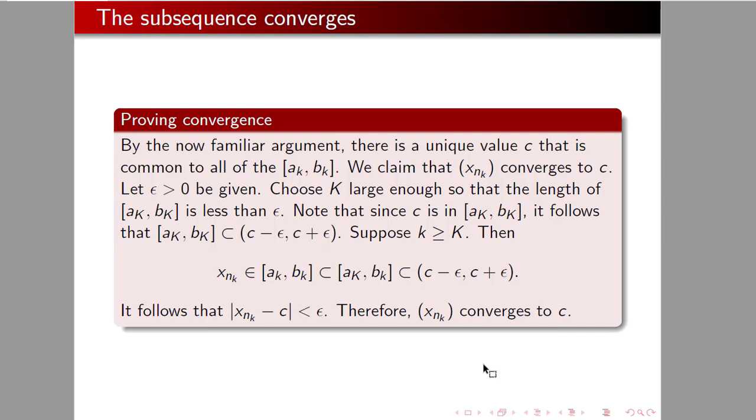Now, suppose that little k is bigger than capital K. So, we would have x sub n sub k, an element of ak, bk, which is an element of a big K, b big K, which is in c minus epsilon, c plus epsilon. And it follows that x n k minus c is less than epsilon. Therefore, our series must converge to c.